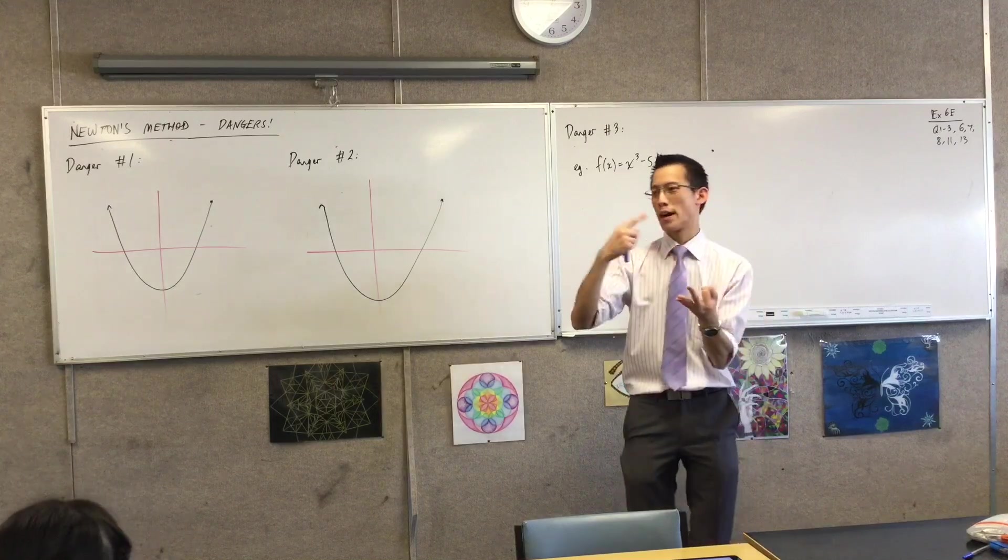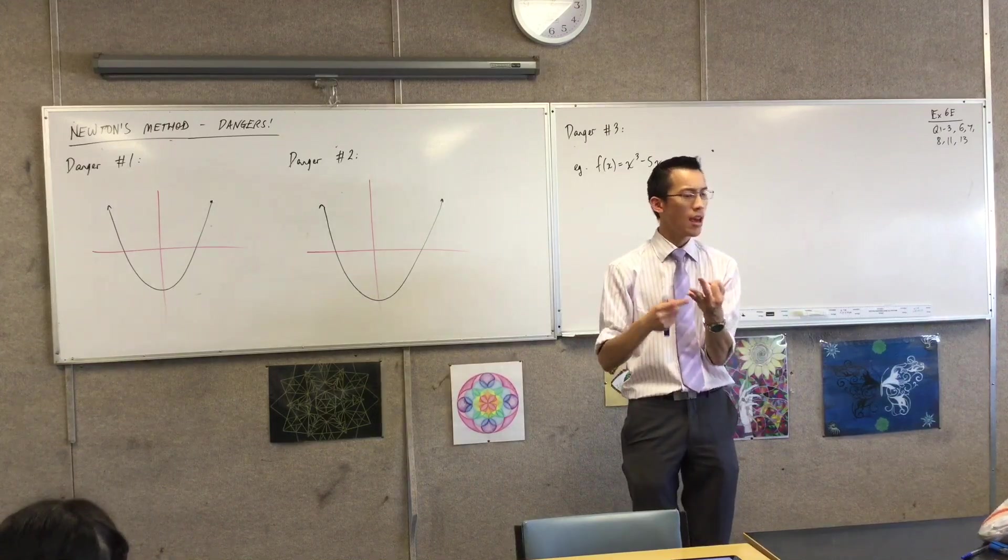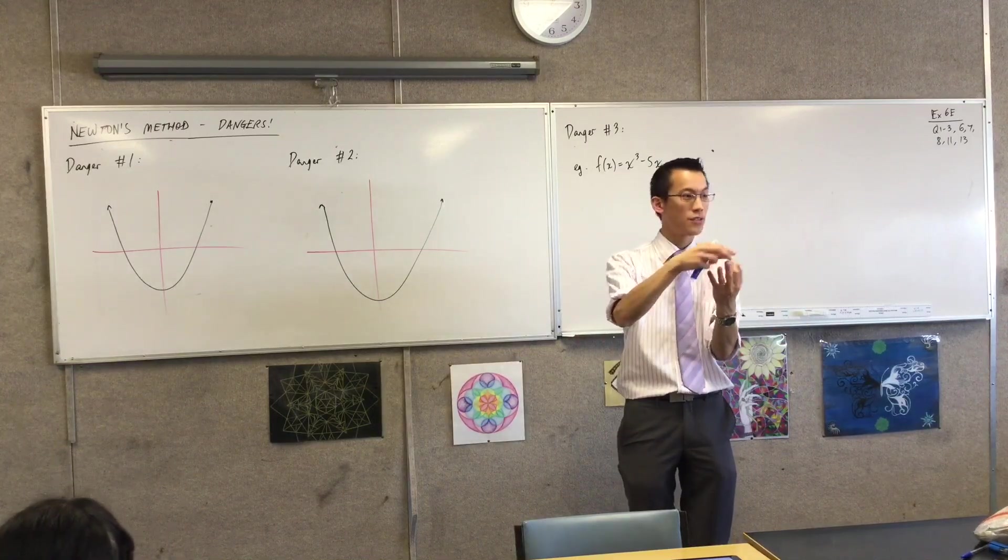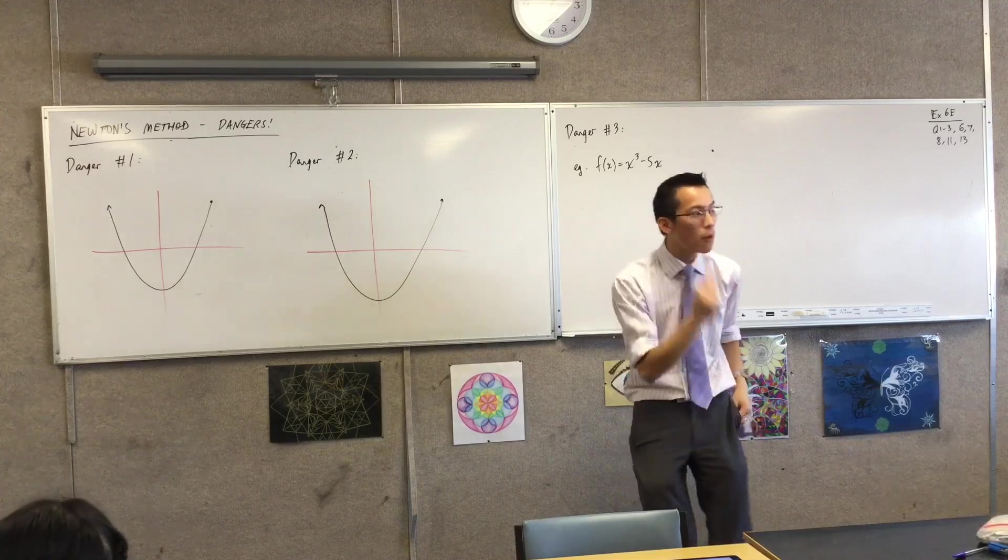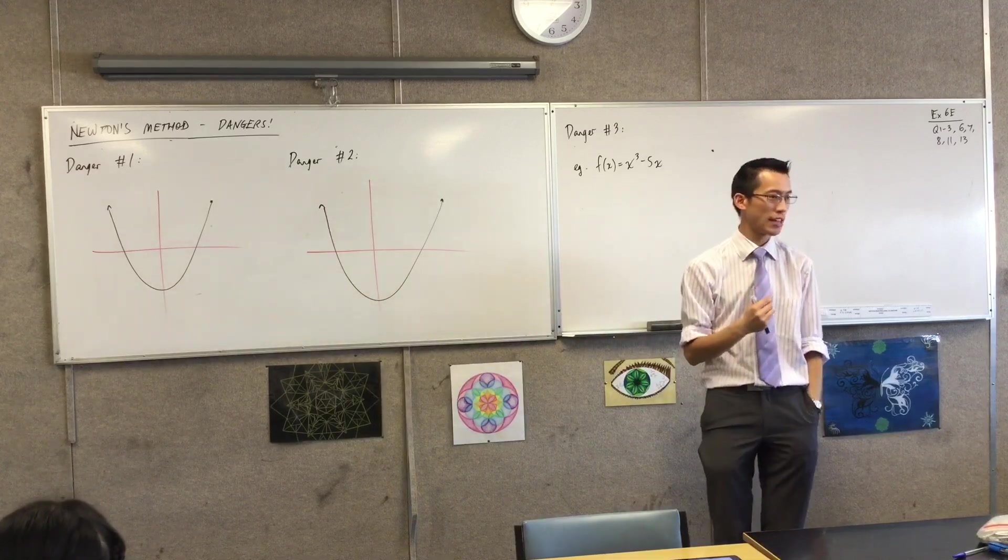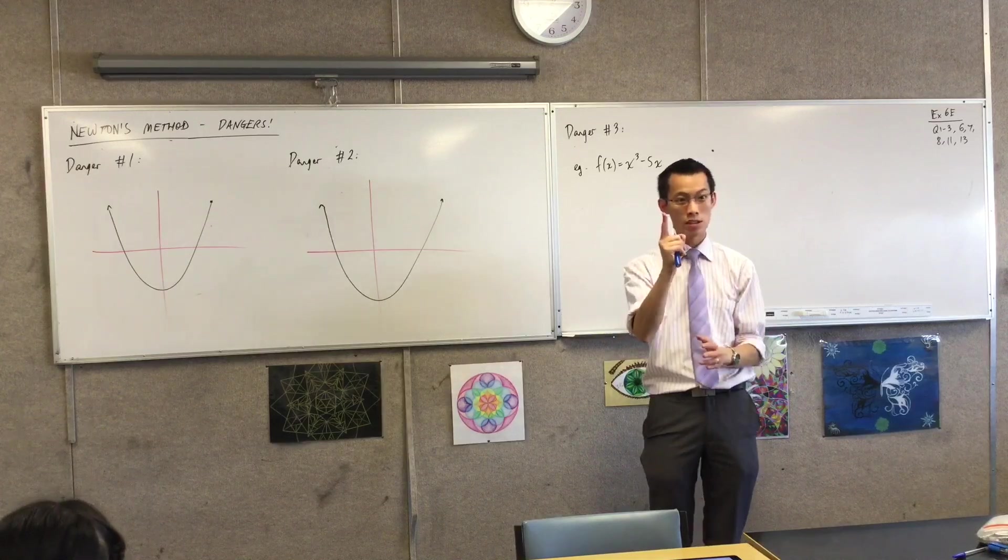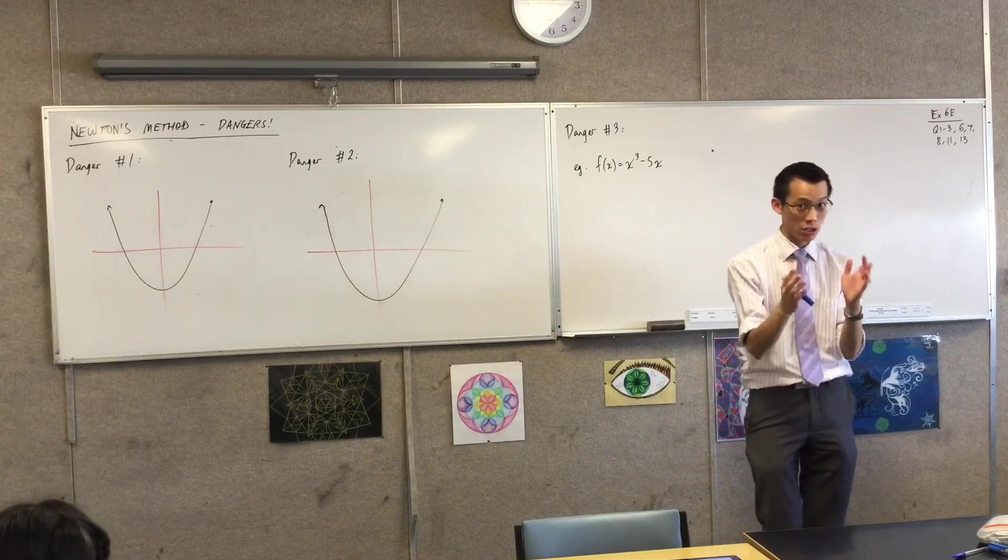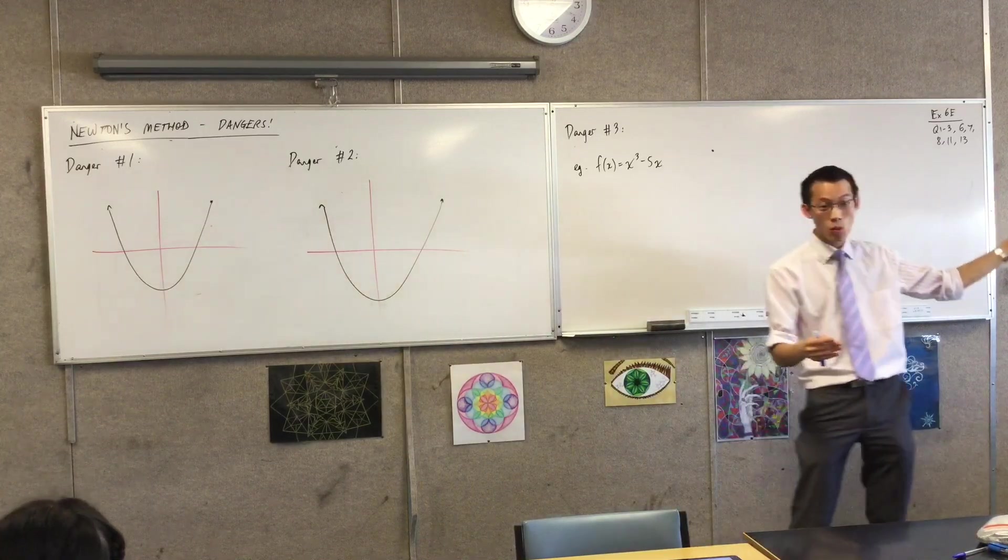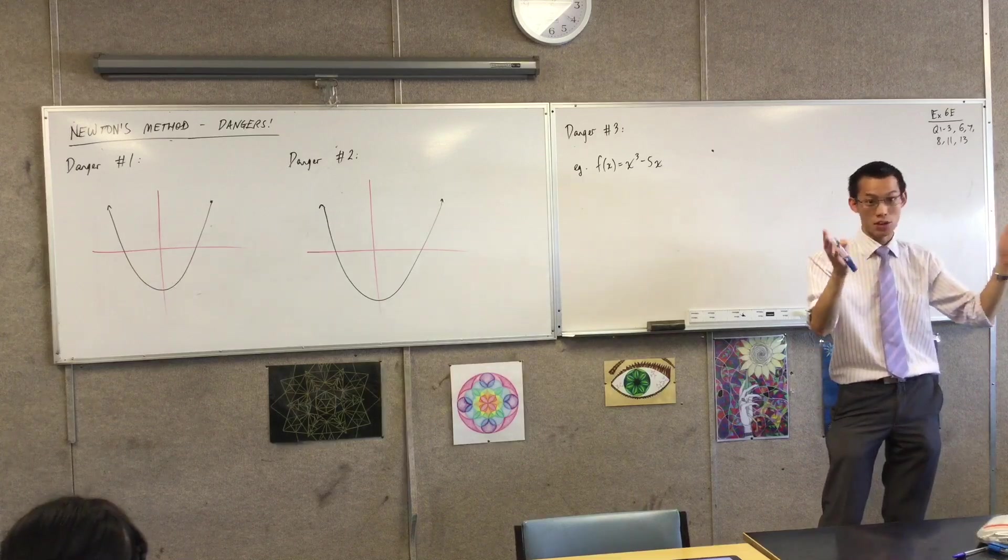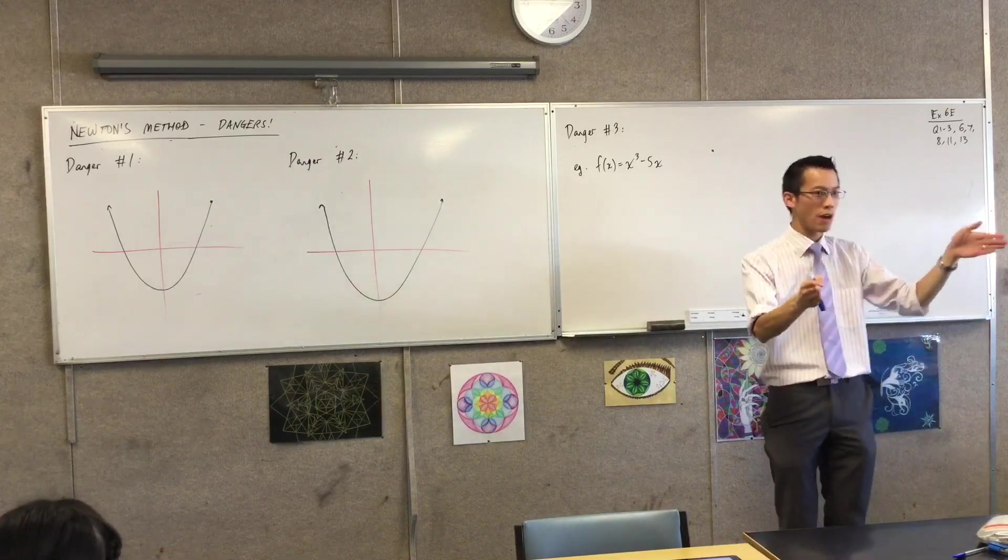In general, you know how we talk about decimal points of accuracy? In general, every application of Newton's method will double the number of decimal places you have accurate. That's why we were like, 1.75, that's one decimal place. Then the next one was 1.732, that's three decimal places. The next one was already seven or eight. So it's incredible how fast it does that.